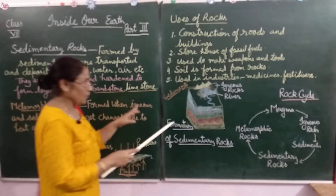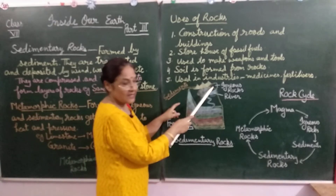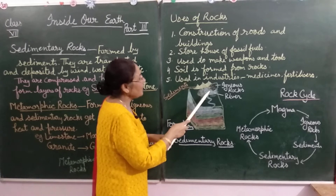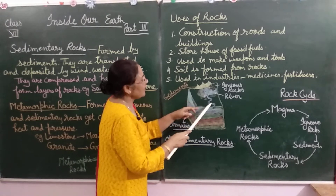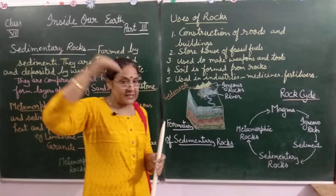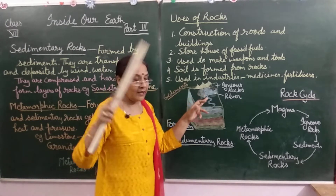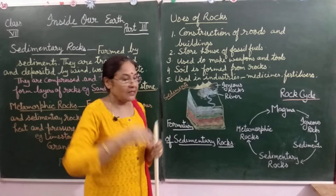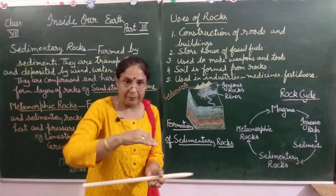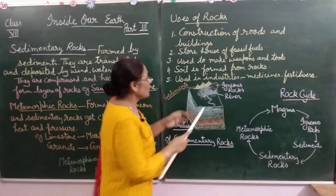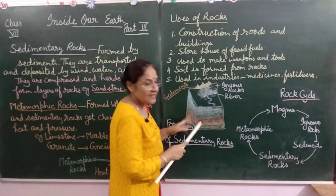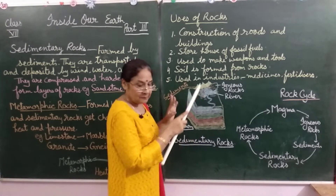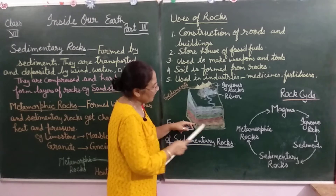Now I am going to explain the diagram of formation of sedimentary rocks. Igneous rocks are converted into sediments, and these sediments are carried by the river. When the river comes from the mountains, the speed of water is very high. When it reaches the plain surface, the water speed slows down and it can no longer carry the sediments, so deposition of sediments begins in this area. The sedimentation starts here, forming different layers.